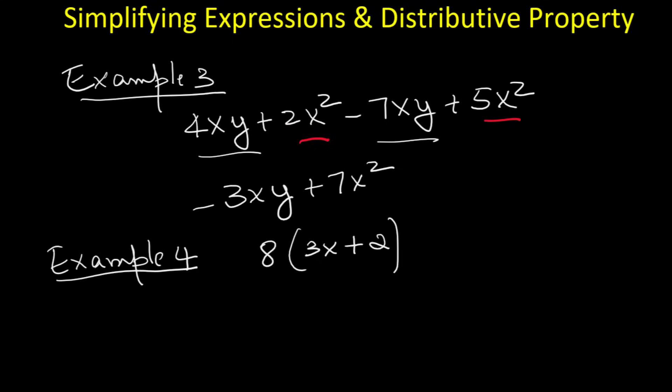Example 4. Now let us switch to the distributive property. Suppose we have 8 times the quantity 3x plus 2. We distribute the 8 to both terms inside the parentheses. 8 times 3x is 24x. 8 times 2 is 16. So the simplified form is 24x plus 16.